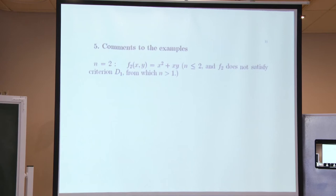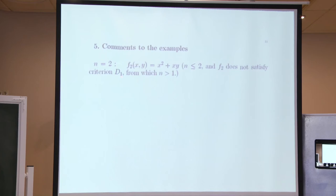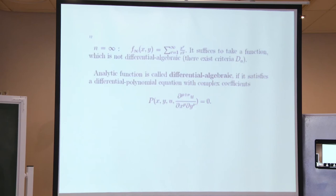Now returning to examples. For the case where n equals 2, this function has complexity 2 for two reasons: first, it is easy to see from the definition that the complexity is not greater than 2; and secondly, we can use criterion d_1, and it is easy to see that this function does not satisfy that criterion, so complexity is strictly greater than 1. Because of this, the complexity is precisely 2.